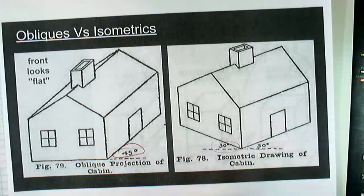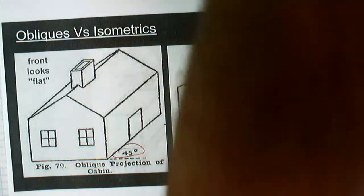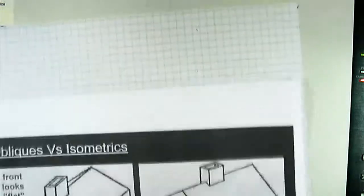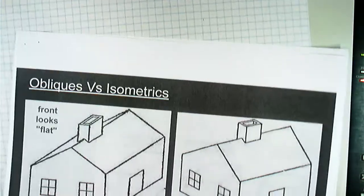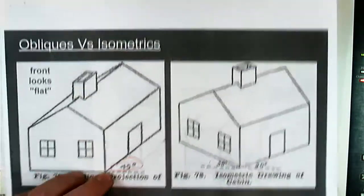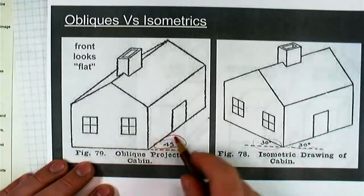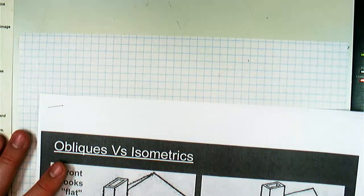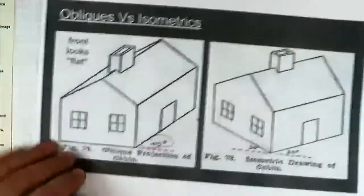If we were going to draw in oblique, we would actually use our 45-degree triangle. We're not going to even be using a triangle today. We're just going to be using graph paper because we're just sketching. But if we were going to be actually drawing, we would use a 45-degree angle. And it just so happens that it is a 45-degree angle if you go diagonally across a grid square. So we're going to use that to our advantage.